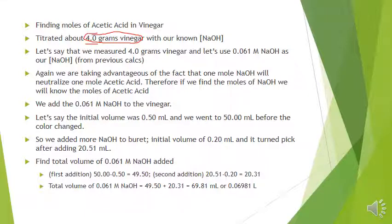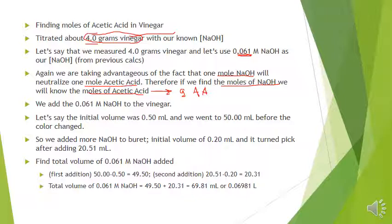We took the four grams of vinegar and dissolved it in about 50 mL of distilled water — the exact volume doesn't matter here. We'll use the 0.061 mol/L NaOH from the previous results. We're taking advantage of the fact that one mole of sodium hydroxide neutralizes one mole of acetic acid — so if we know the moles of NaOH, we know the moles of acetic acid, and from that we can calculate the grams of acetic acid.